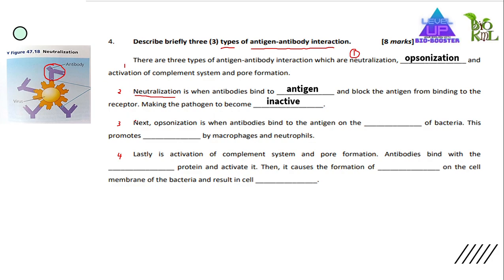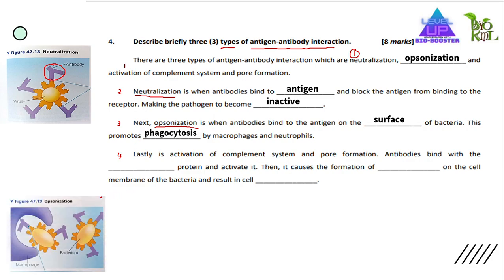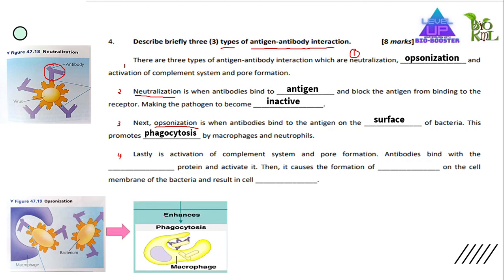The second antigen-antibody interaction is opsonization. Opsonization is when antibodies bind to the antigen on the surface of bacteria, and this promotes phagocytosis by macrophages and neutrophils. The macrophage will engulf the bacteria or pathogens.